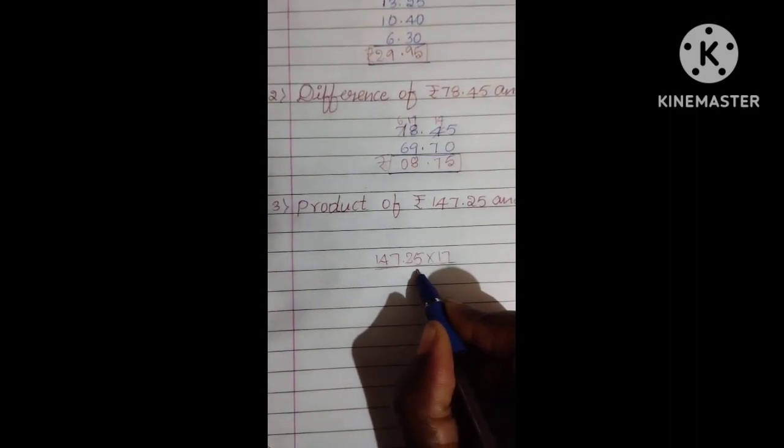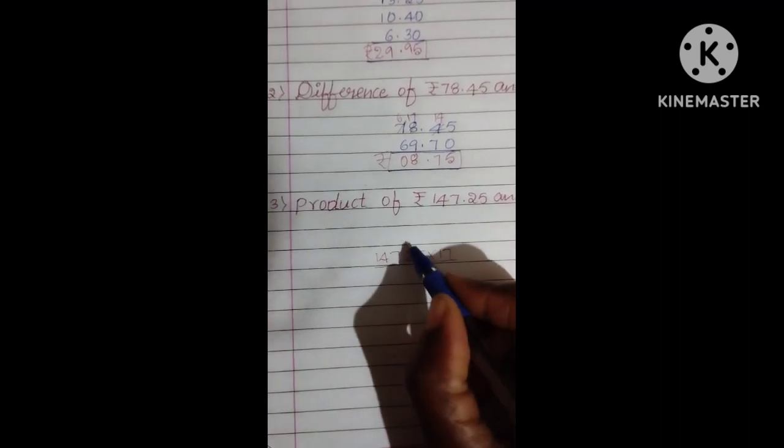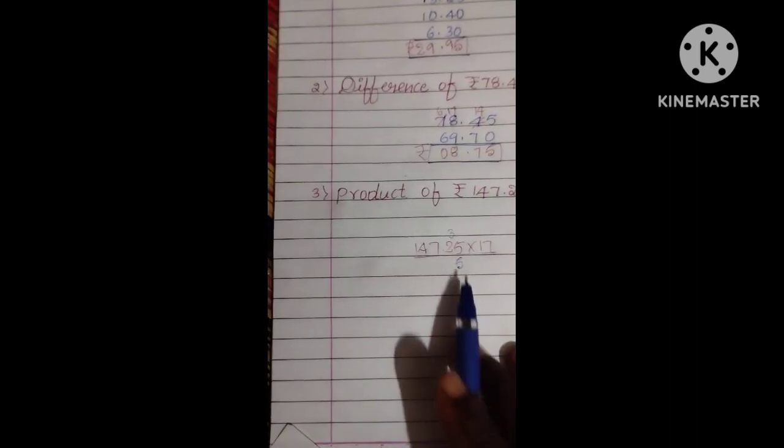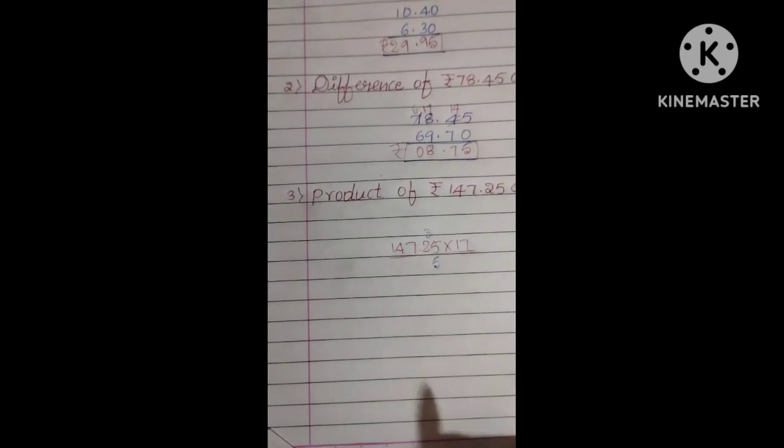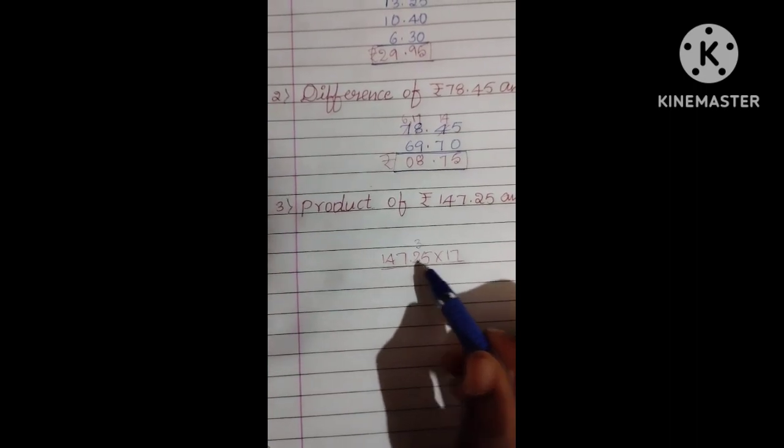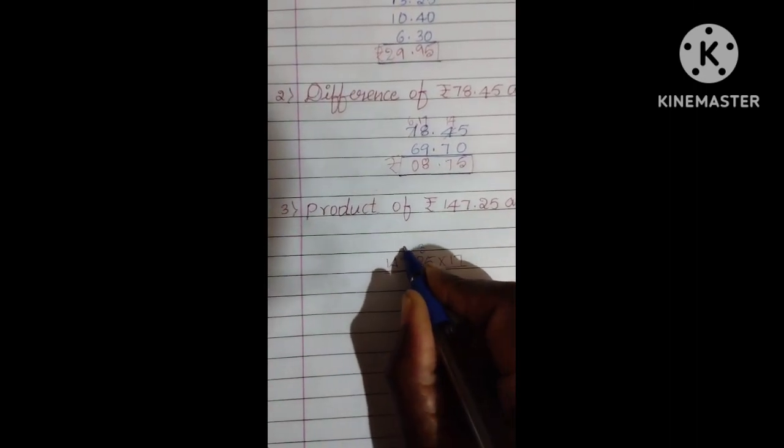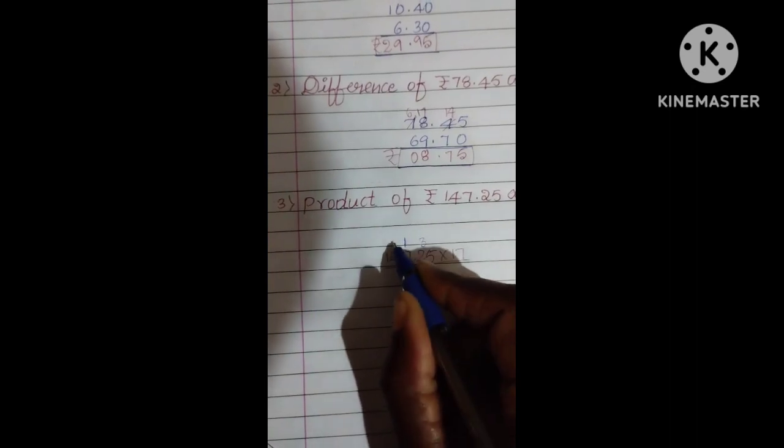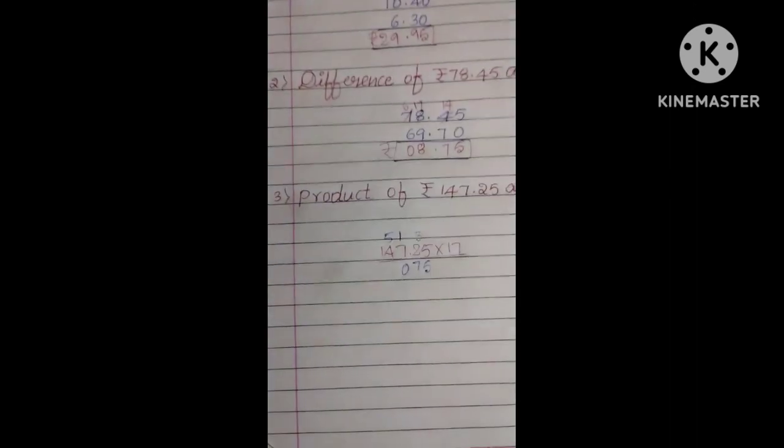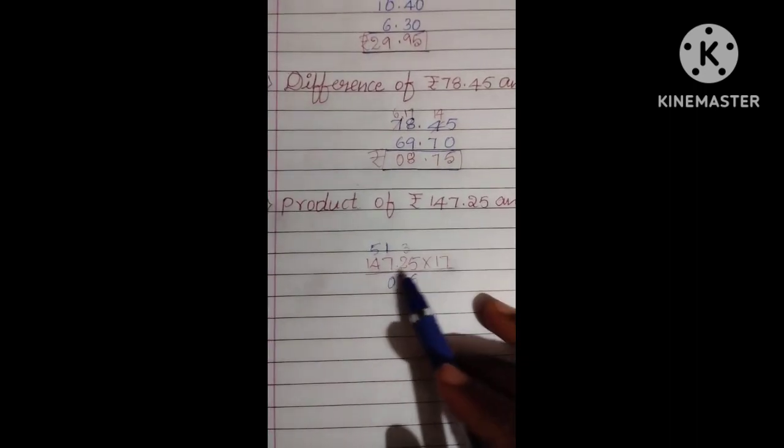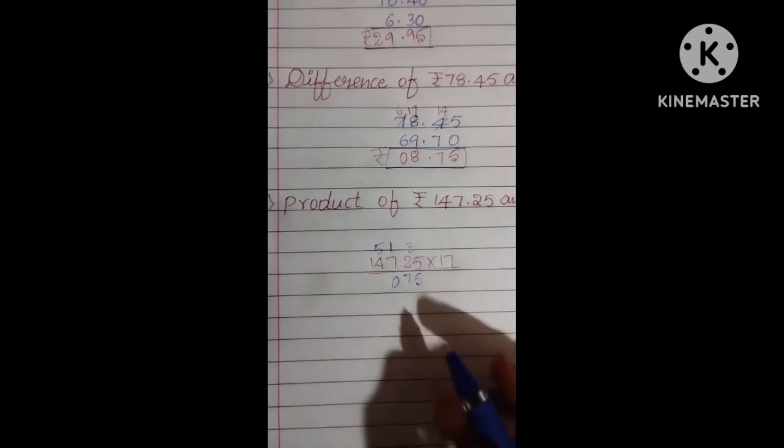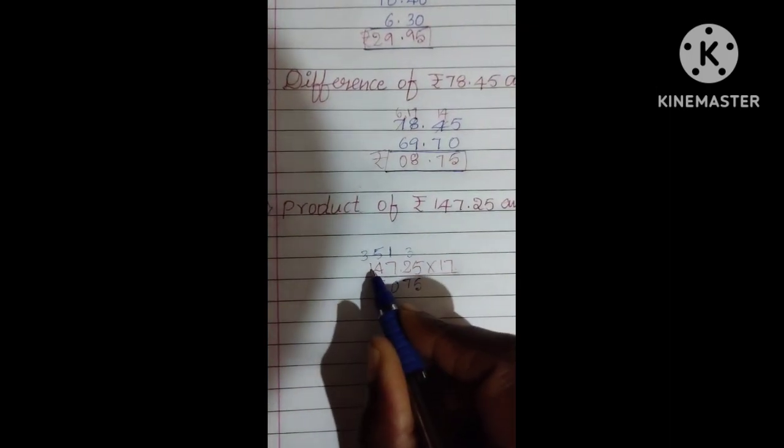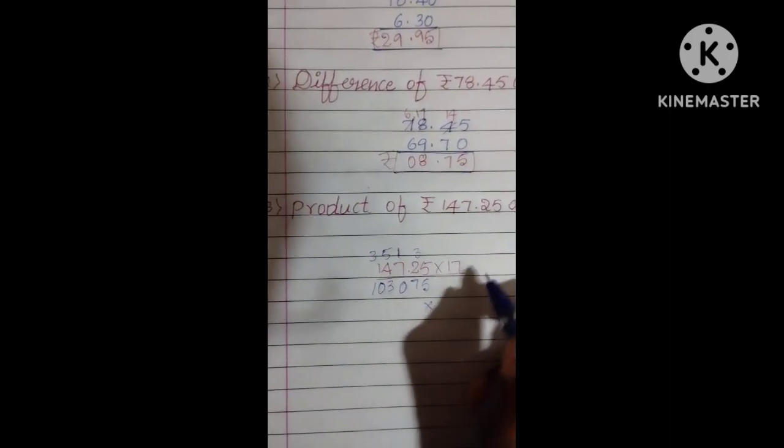Now, 7, 5 is 35. 5, you want to write here. Next, 3 goes to carry. Now, 7, 2 is 14. 14 plus 3, 17. 1 goes to carry. Now, 7, 7 is 49. 49 plus 1, 50. 5 goes to carry. Now, 7, 4 is 28. 28 plus 5, 33. 3 goes to carry. 7, 1 is 7. Plus 1, 10. Now, we have completed 1 digit.